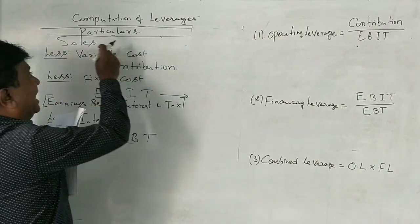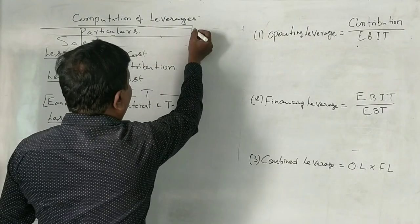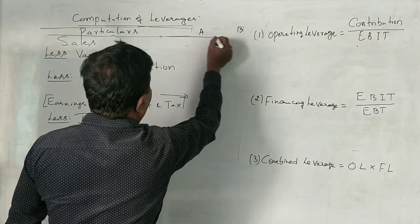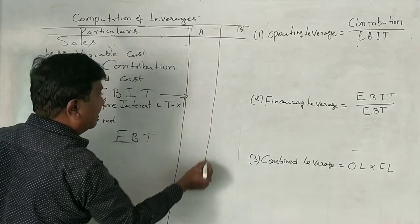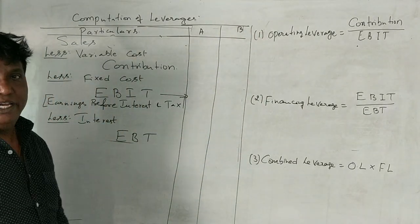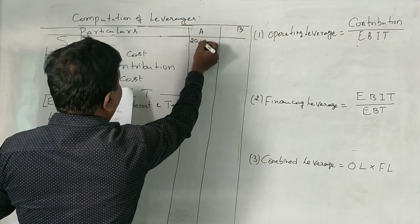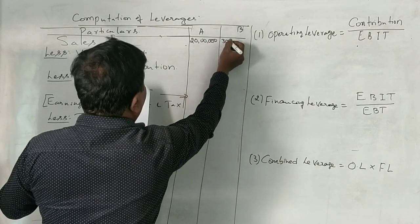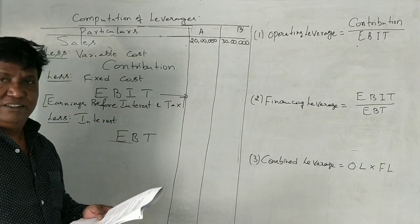Now what I do is I will calculate. I will keep the formula line as it is. Here I will take it as firm A and firm B. Now firm A and firm B. Now what is the sales given for firm A is 20 lakhs and 30 lakhs.